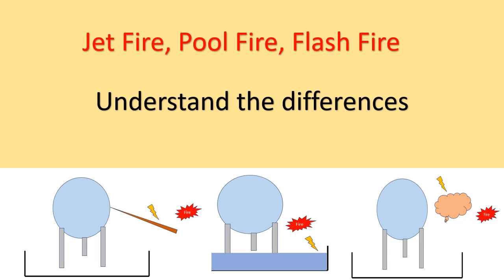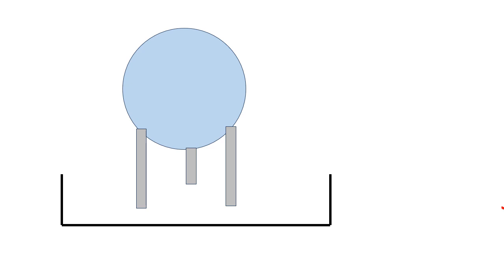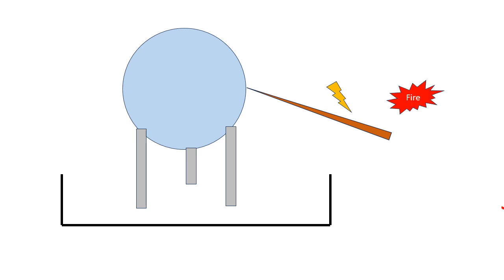In this video we are going to explore three important types of industrial fires: jet fire, pool fire and flash fire with practical examples. Consider a sphere inside a tank. If there is a leakage from the sphere, as the liquid inside is in a pressurized condition, a small hole or leakage would create a jet of liquid. If this liquid gets ignited in the flow, it will create a fire. This is known as jet fire.